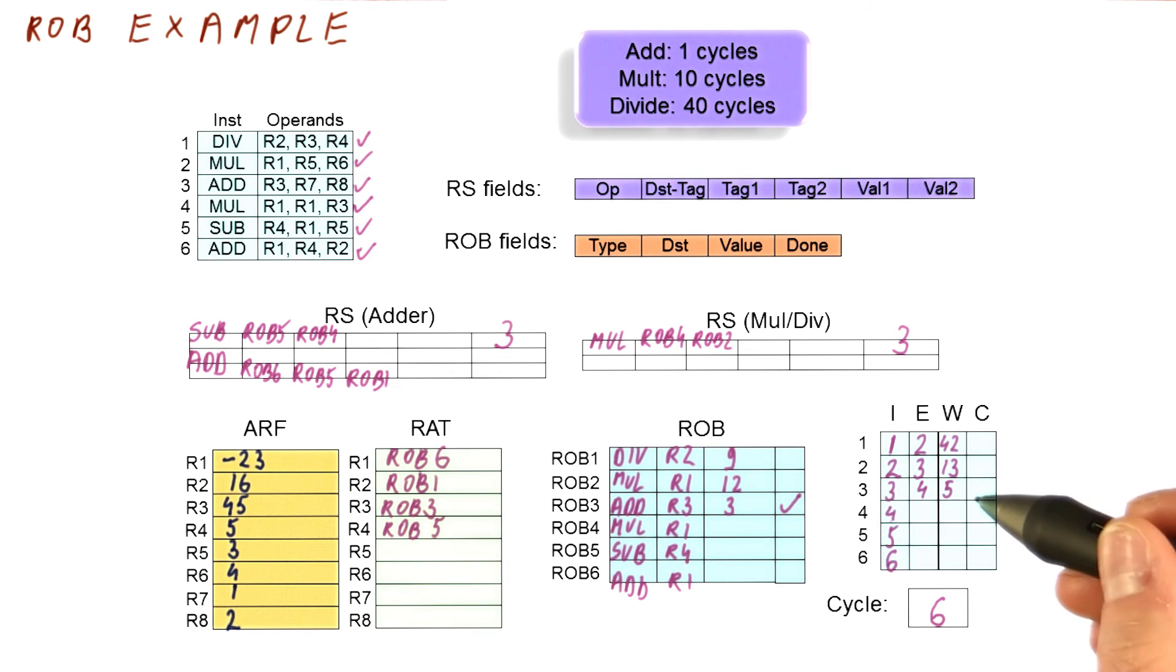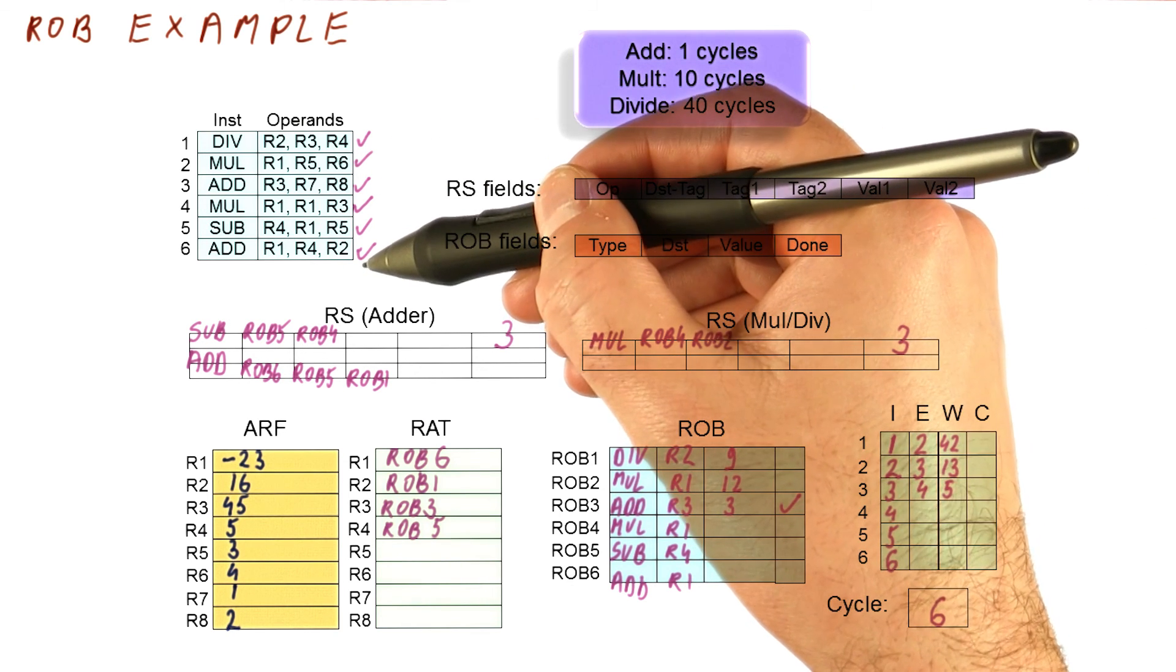So in cycle six, this is all that happens. There is no commit here. And now we move to cycle seven, in which case we have nothing to issue anymore. So issuing will not be an issue anymore.